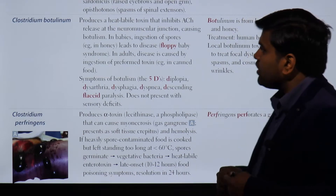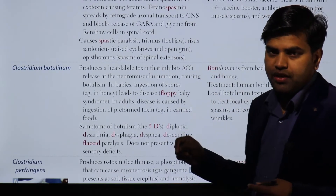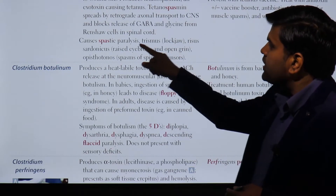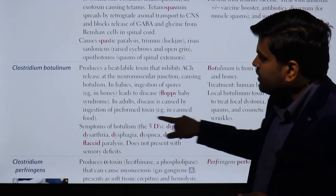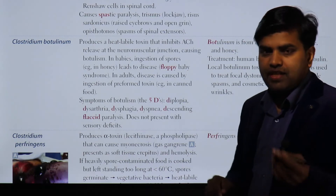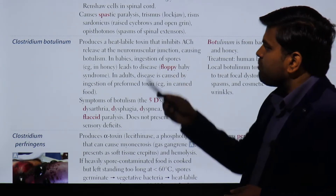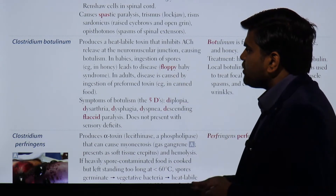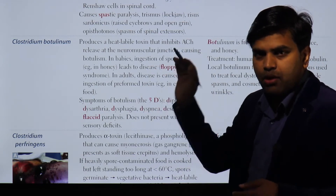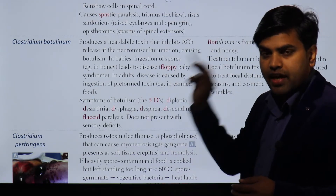Now coming to Clostridium botulinum, which causes the opposite type of paralysis compared to C. tetani. C. tetani causes spastic paralysis, whereas C. botulinum causes flaccid paralysis. C. botulinum is a gram-positive anaerobic, spore-forming bacterium.